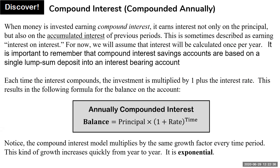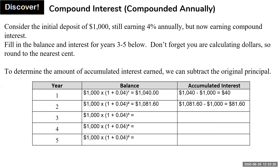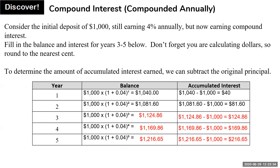Now we look at compound interest. When money is invested earning compound interest, it earns interest not only on the principal but also on the accumulated interest of previous periods. Here is the formula for compound interest compounded annually. We also look at compounded periodically. This formula can be found on your formula sheet on page 236. This is called interest on interest. We find the balance for year three, year four, year five — that is how compound interest works.